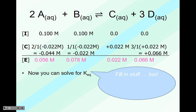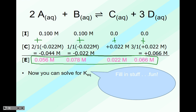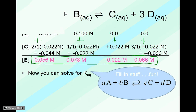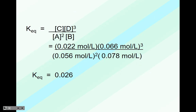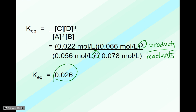Now that we have everything filled in — remember, we're adding the initial and change rows to get the equilibrium row — we can fill in our equation. We go ahead and fill it in. Don't forget your coefficients and where they belong: it's products over reactants. Then our calculator does the work for us to get an answer, and there are no units — it's just referred to as the equilibrium constant.